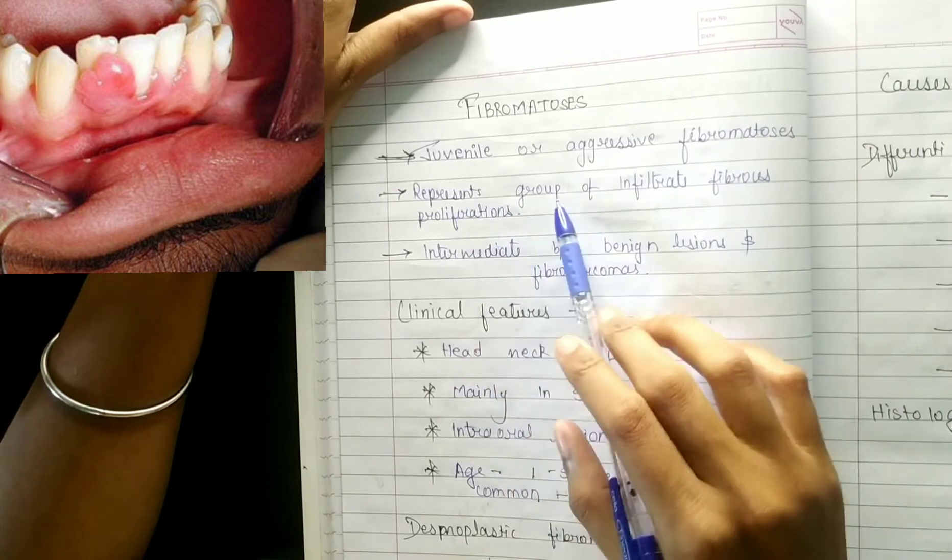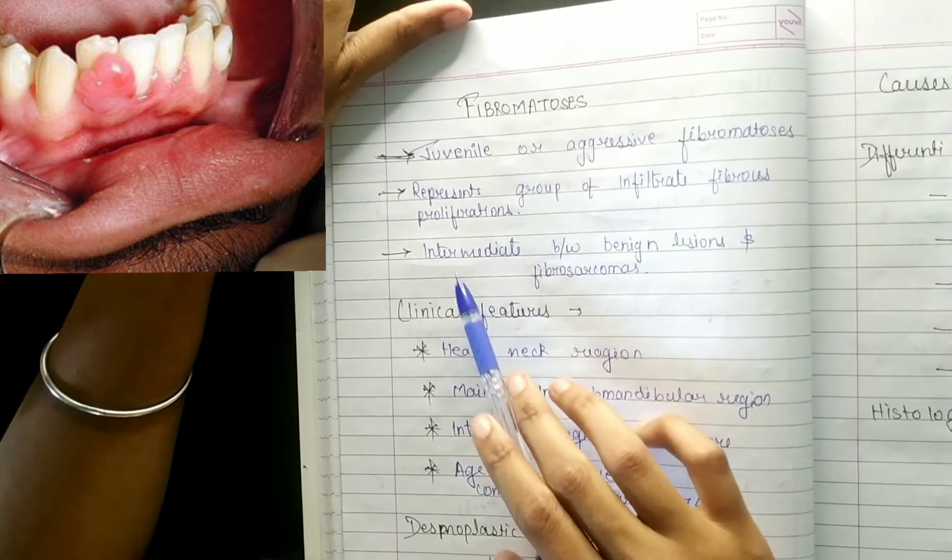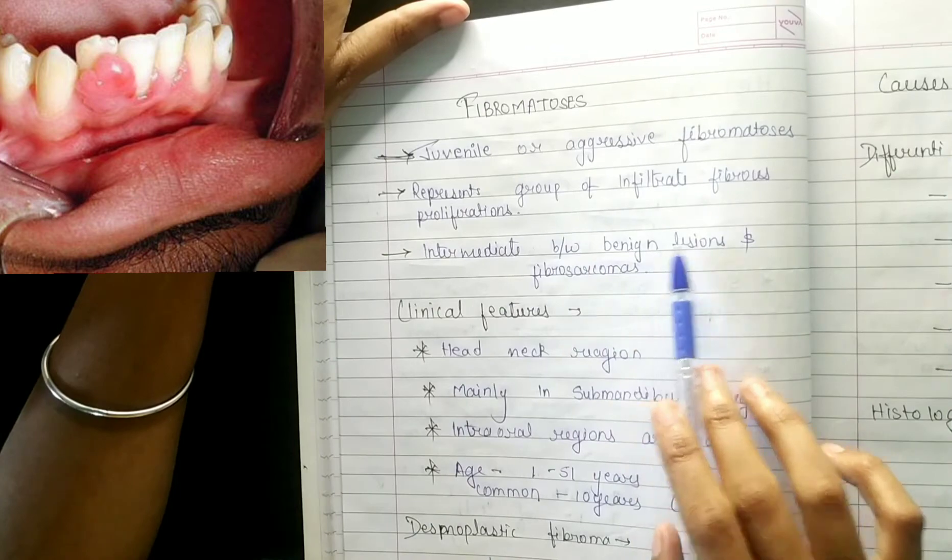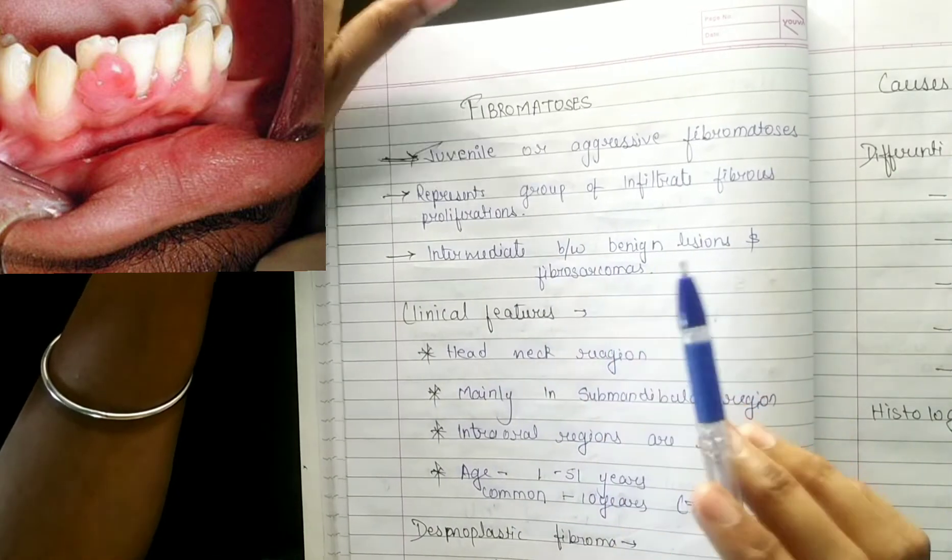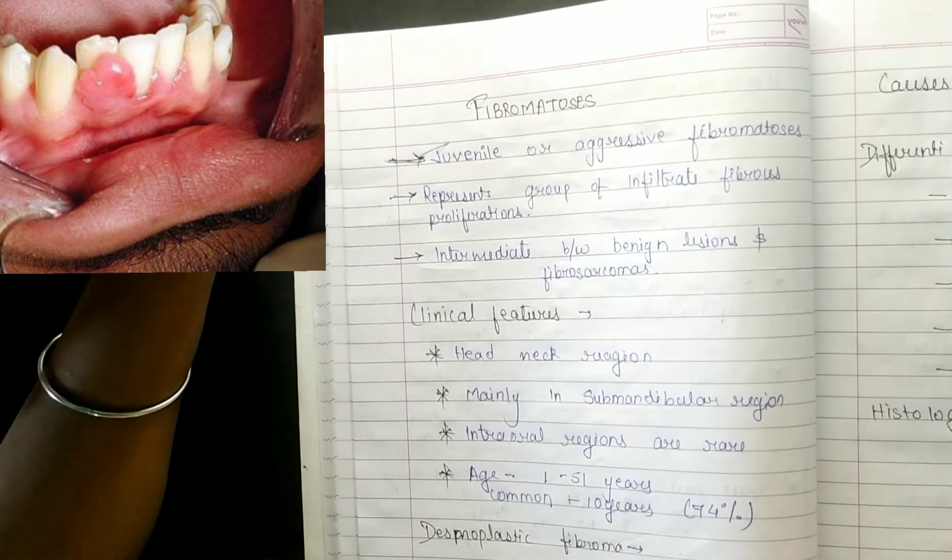It represents a group of infiltrated fibrous proliferation intermediate between benign lesions and fibrosarcoma. It is intermediate between benign lesion and fibrosarcoma.